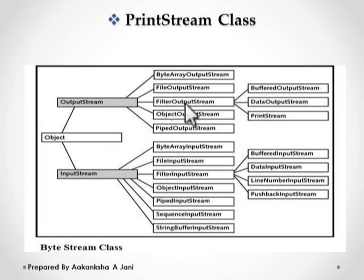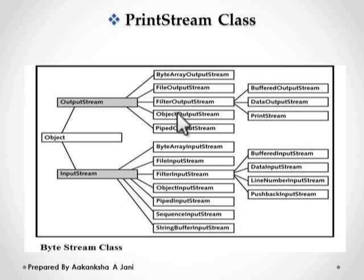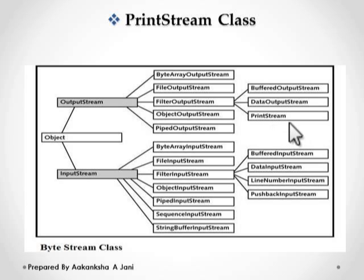OutputStream class has the write methods to write data to some destination. FilterOutputStream is the subclass of OutputStream class, and PrintStream class is the subclass of FilterOutputStream class. PrintStream class implements the Appendable interface. Objects of PrintStream class write formatted strings to the destination, which is always a byte stream. Any methods you have used on System.out, such as print or println, will work on a PrintStream class.